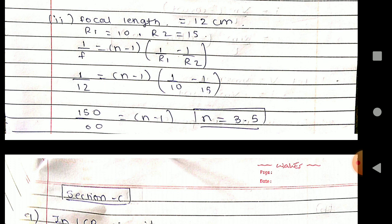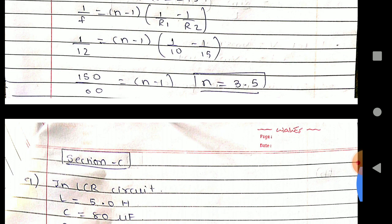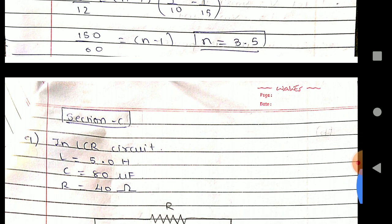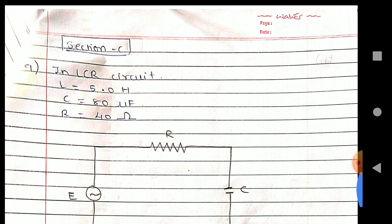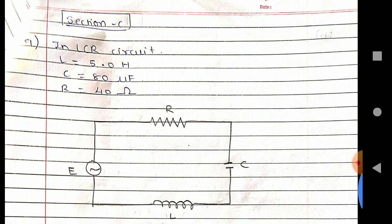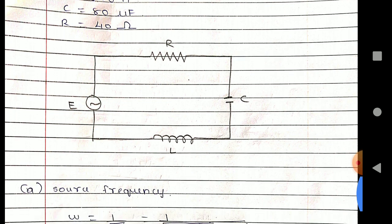1 upon f equals (n minus 1)(1/r1 minus 1/r2). Therefore, now we have to just place the value, then you will get 150 upon 60 equals n minus 1. N equals 1.5. Next is Section C: In LC circuit, L equals 0.04 H, C equals 40 microfarad.